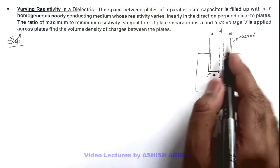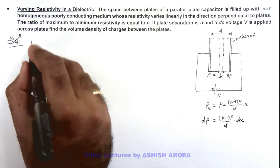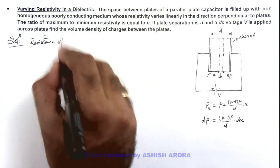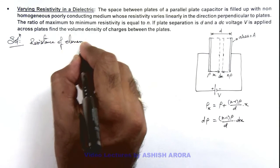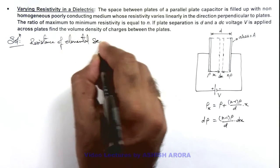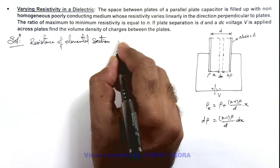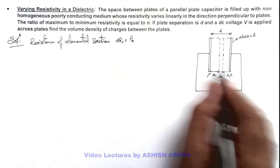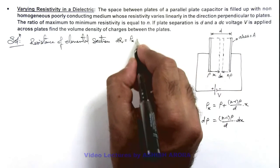Here, if we calculate the resistance of elemental section which we have considered in capacitor, say dR, then this can be written as ρ at the position x multiplied by dx divided by cross sectional area.